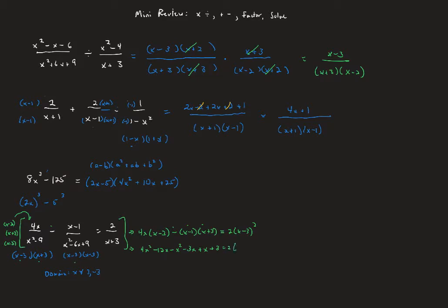On the right side, distributing 2 into x minus 3 squared gives 2x squared minus 12x plus 18. Collecting terms on the left: 4x squared minus x squared is 3x squared. For the x terms: negative 12x minus 3x plus x gives negative 14x. And we have a plus 3. So the left side is 3x squared minus 14x plus 3, and the right side is 2x squared minus 12x plus 18.